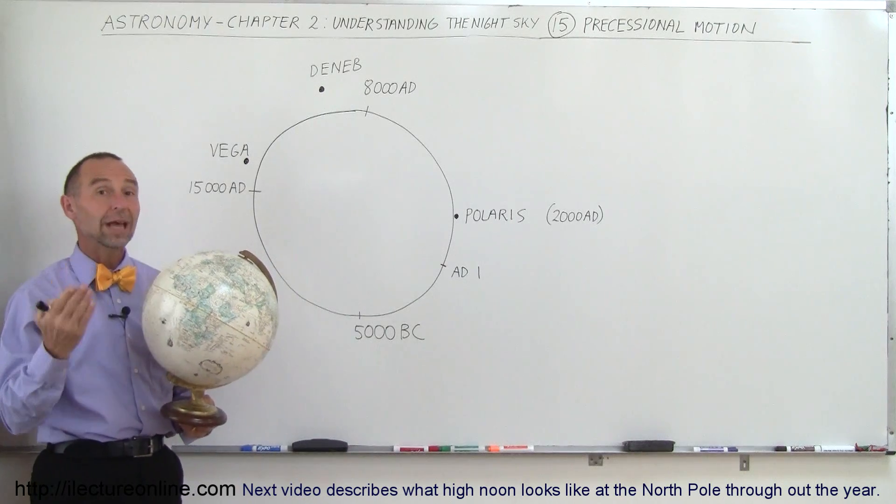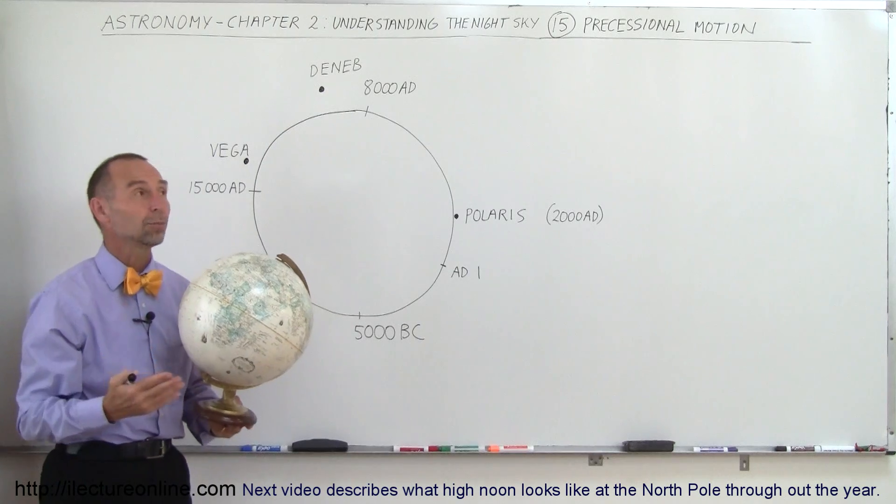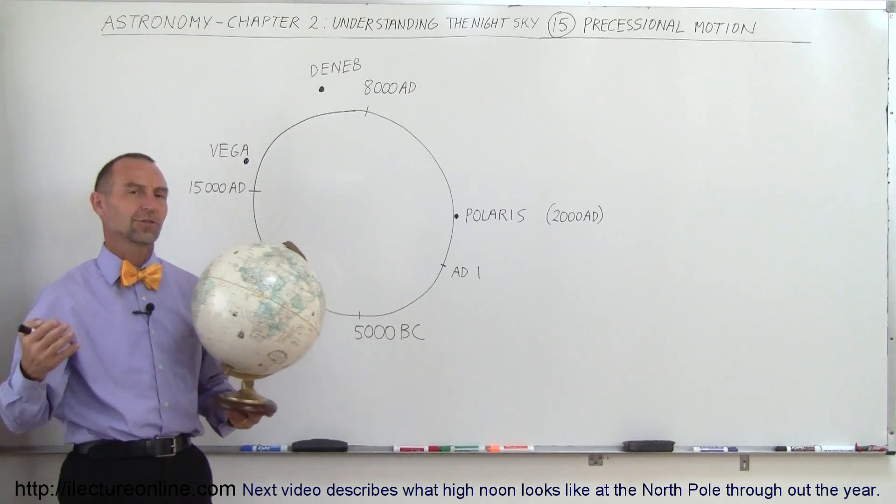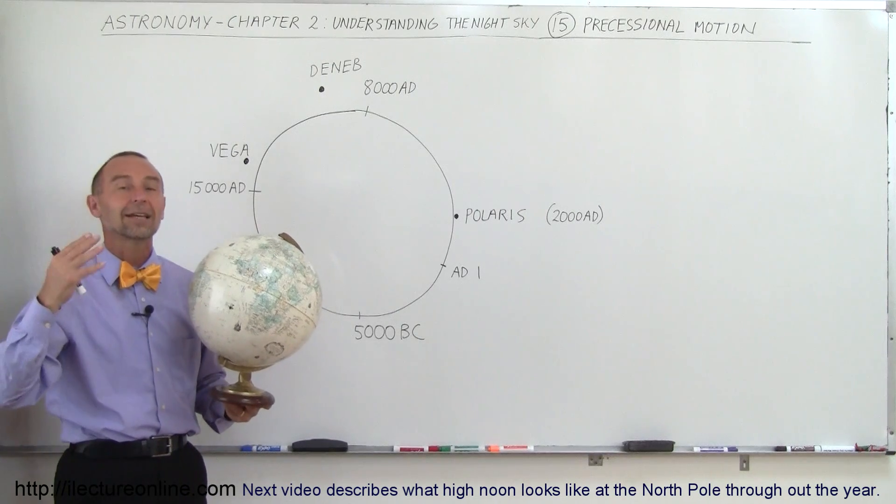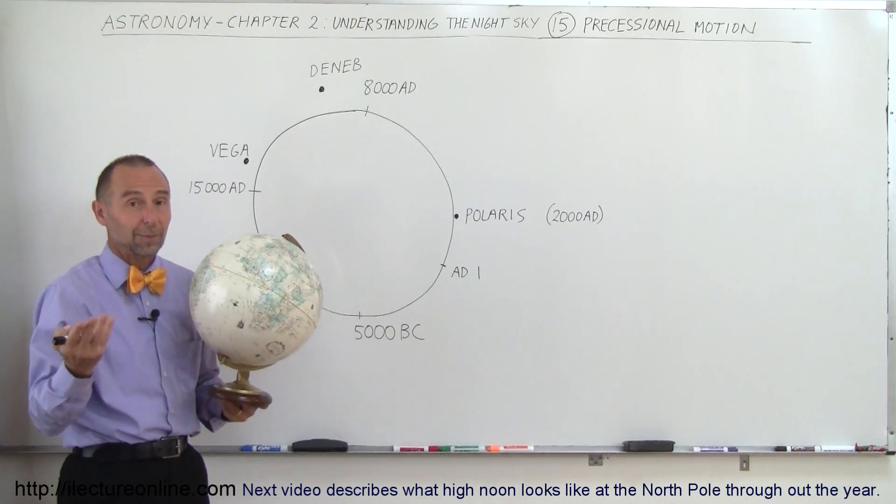So even though today, as we look in the northern direction towards the North Celestial Pole, we'll see Polaris, the North Star. And if you're lost in the woods or in the forest or in the desert and it's clear at night, you can actually find your way, find where North is by finding Polaris, the North Star.